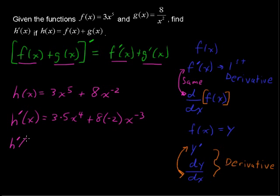So just to simplify this, h prime of x, that's the first derivative of h, equals 15x to the fourth minus 16 over x to the third. So I've used the properties of negative exponents, and x to the negative third is the same as 1 over x to the positive third. So this is our answer.